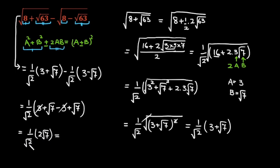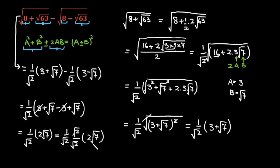We don't like a square root in the denominator. So this is 1 over √2 times 2√7. If I multiply and divide with √2 — multiply with √2 and divide with √2 — inside the bracket is 2 times √7. So √2 times √2 is 2, and the 2's cancel, leaving √2 times √7.